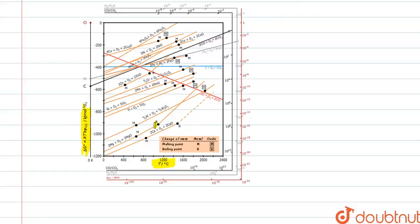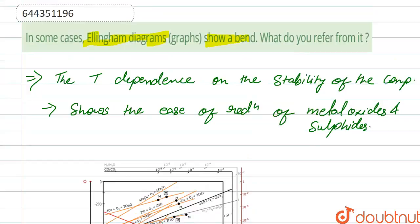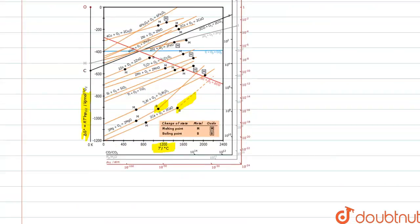Here you can see this is the bending, and we have to discuss what they refer. So you can see that it is the diagram of oxides, that is MTO or CO. It is the diagram of oxide, and we show the melting point and boiling point.